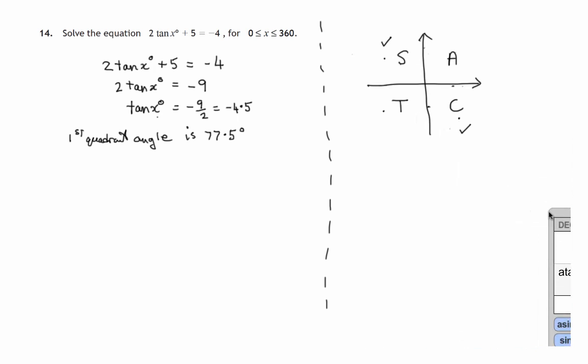And the answer is 77.47. Let's say it's 77.5 to three figures. So it's 77.5 degrees. That's my first quadrant angle. So that would be an angle in here, quite a steep angle, measured round from the x-axis.